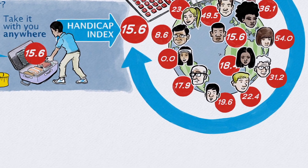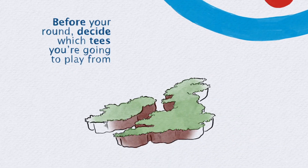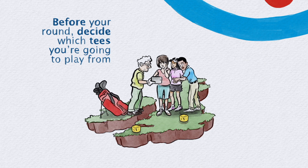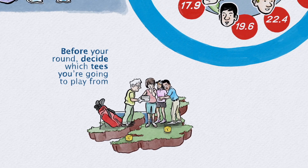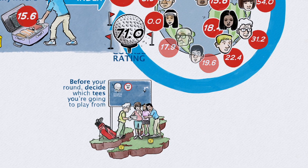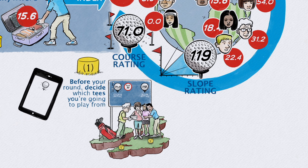Before your round, decide which tees you're going to play from, which can be different for each member of your group. Every set of tees will have a course and slope rating based on course difficulty. These will normally be available on a lookup chart near the first tee or through an app.